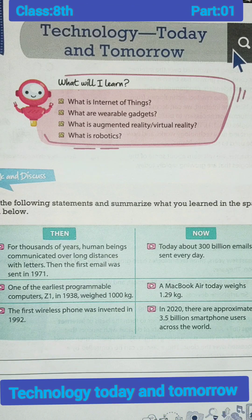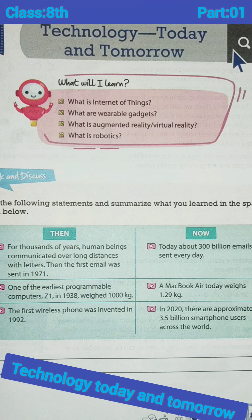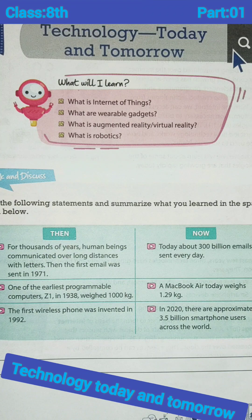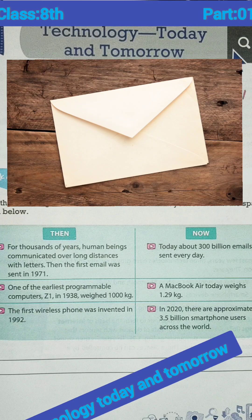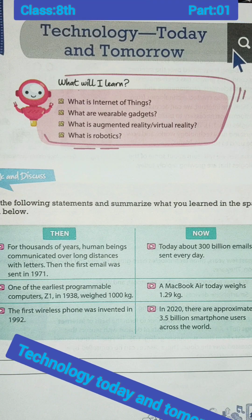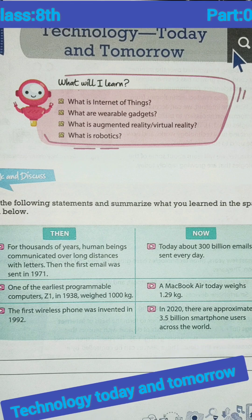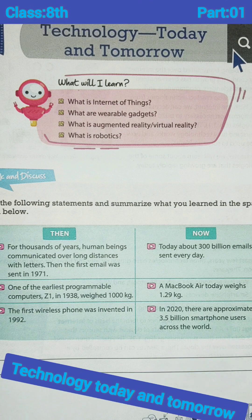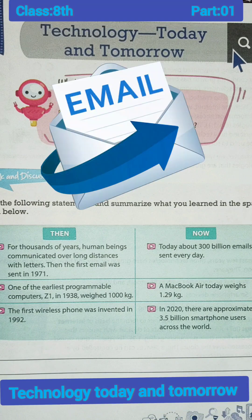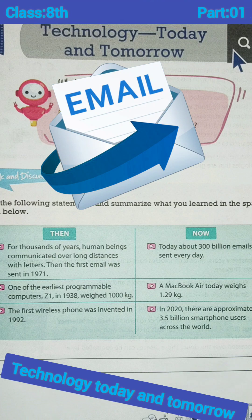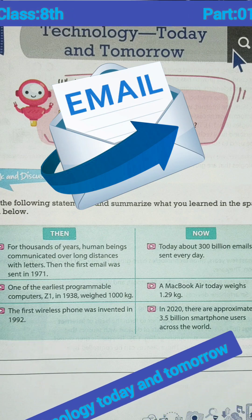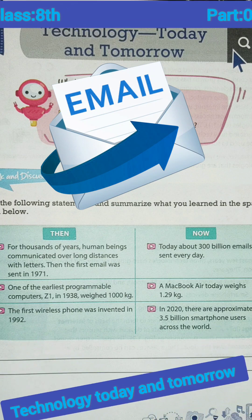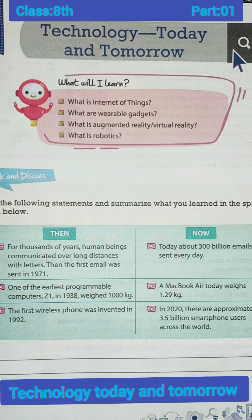In that time there was no mobile facility or internet facility available, so people communicated with each other through letters — that was the main option. The first email was sent in 1971. Now, today about 300 million emails are sent every day. So compared to olden days and nowadays, the difference is huge.